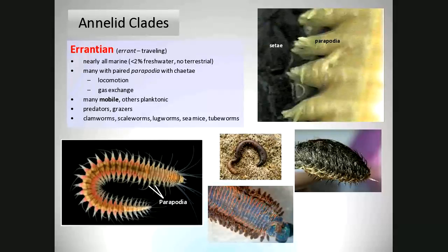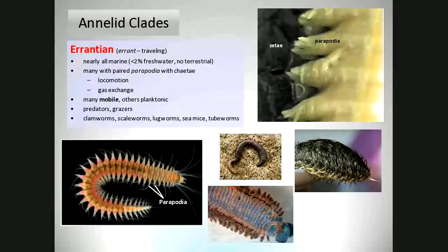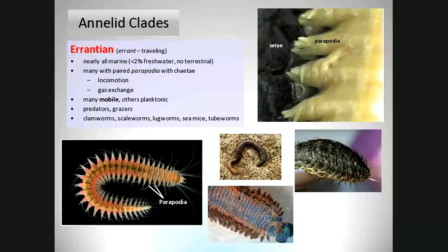We did flatworms yesterday, today we're doing segmented worms, and we'll also talk about roundworms. There are many types of worms, and just because you look like a worm doesn't mean you're related. But these segmented worms, the annelids — the annelida phylum — belong to a group called the Errantian clade of the annelids. Errant means to travel, meaning these particular worms move efficiently compared to other kinds.